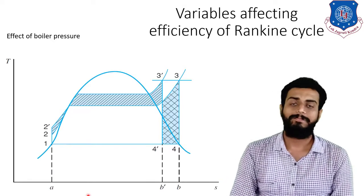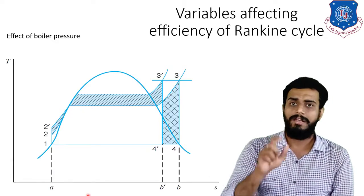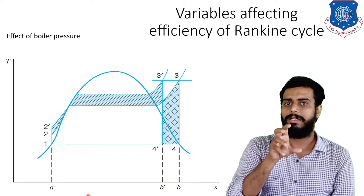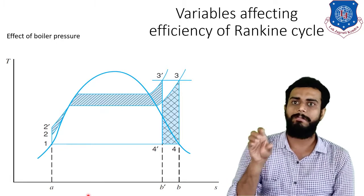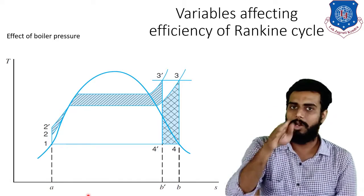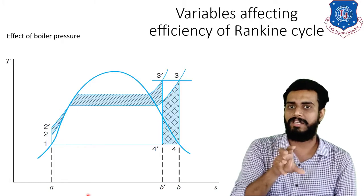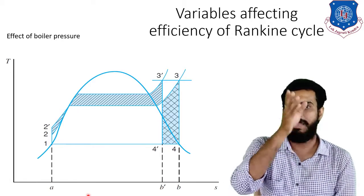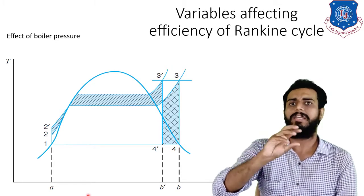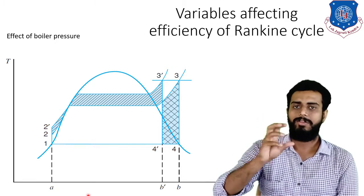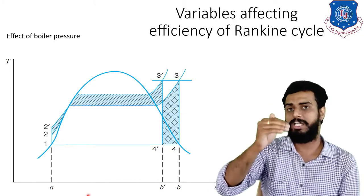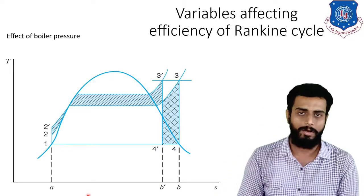The net work done that increased is shown by area 2'-3'-2, which is the hatched portion. The reduction in net work done is shown by the cross-marked area. Both areas are nearly the same. The increase in efficiency here therefore depends on the reduction in heat rejection.